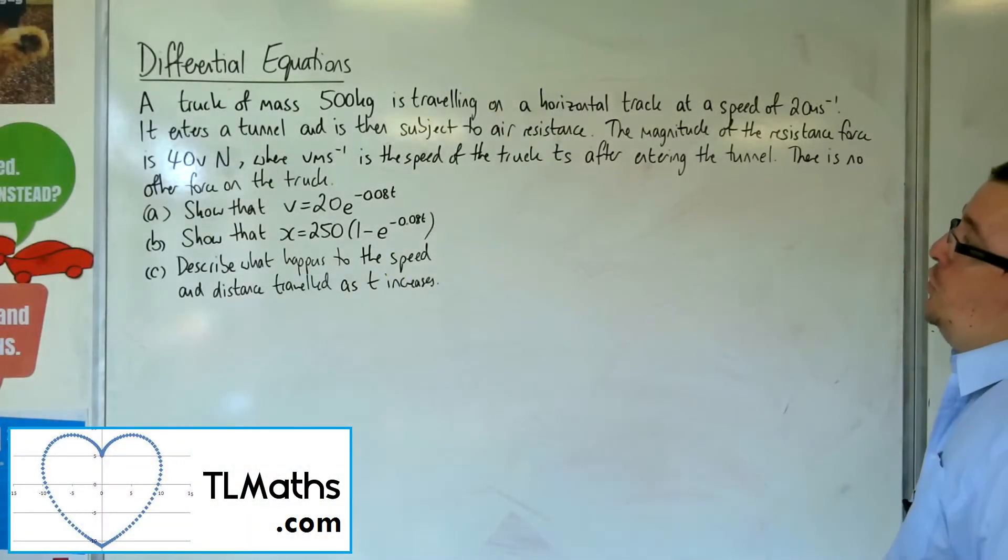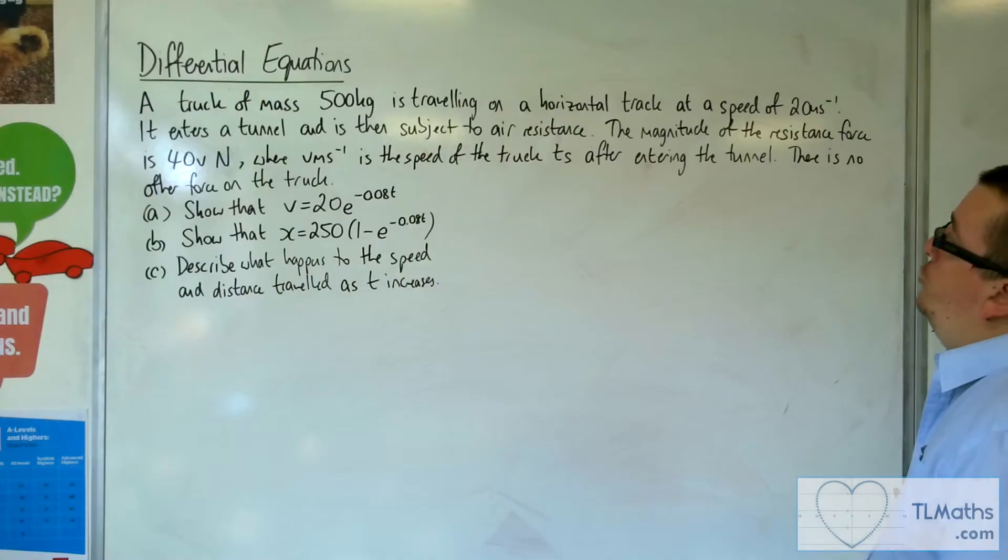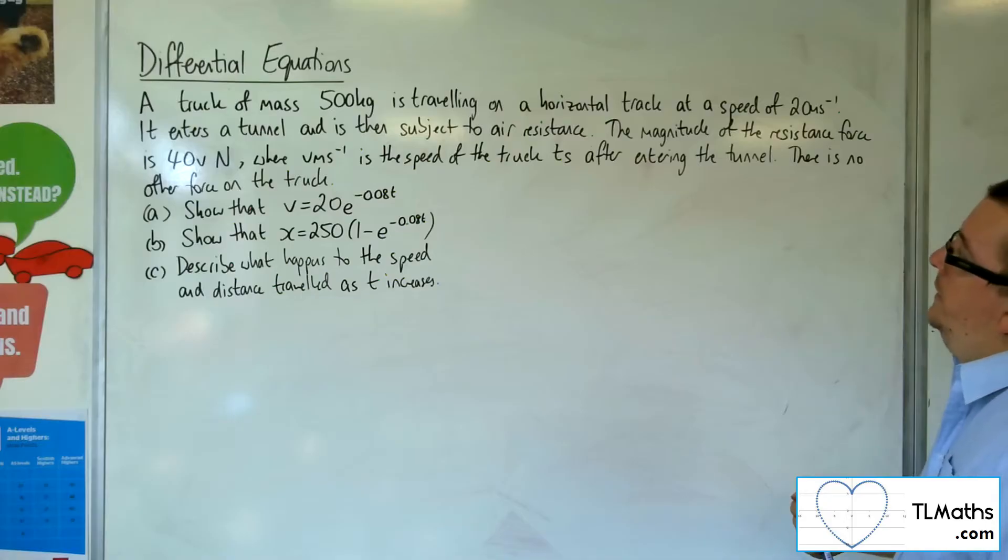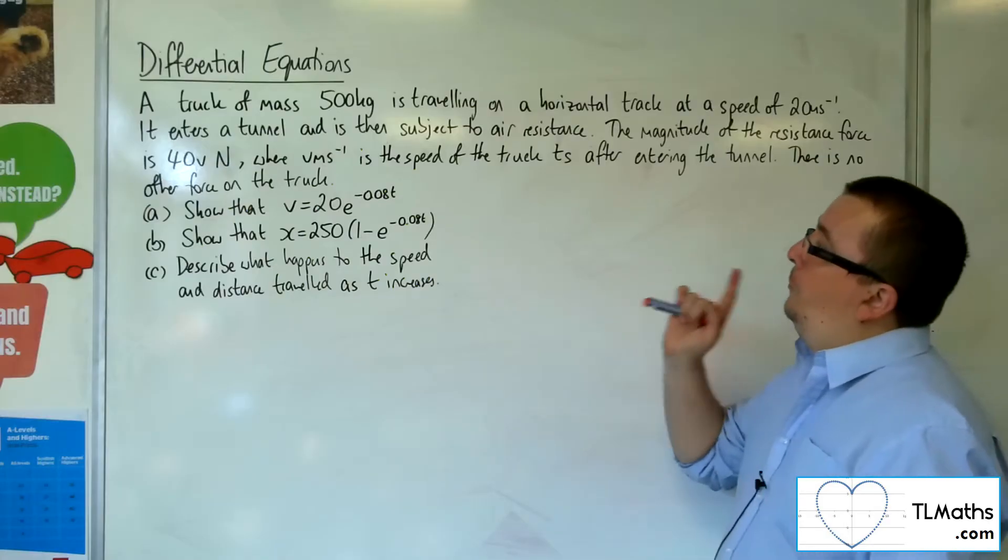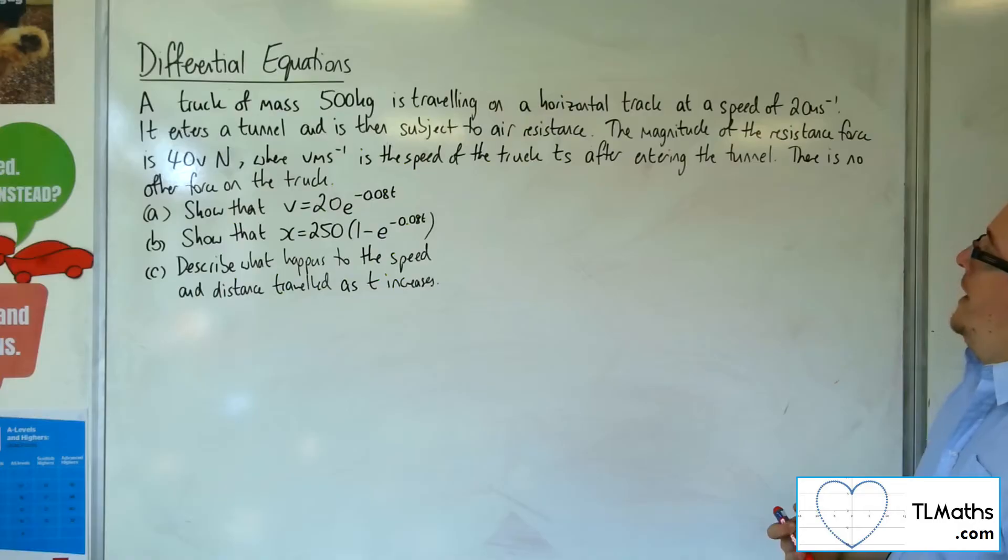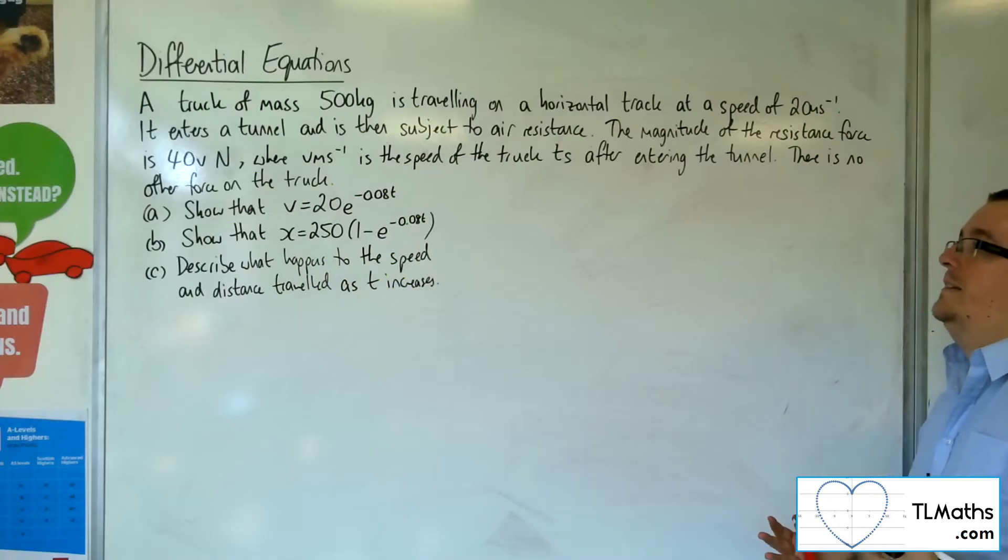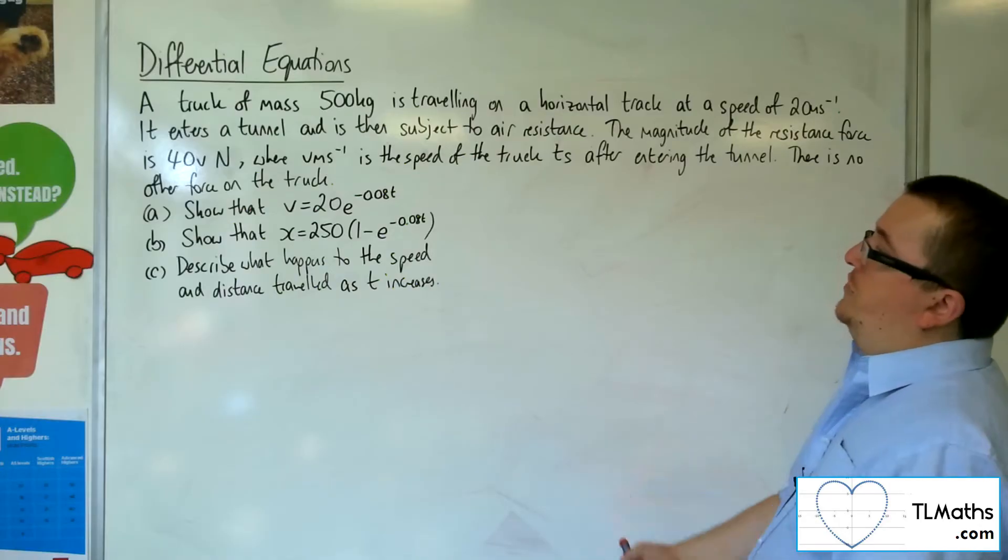A truck of mass 500 kilos is traveling on a horizontal track at a speed of 20 meters per second. It enters a tunnel and is then subject to air resistance. The magnitude of the resistance force is 40V newtons, where V meters per second is the speed of the truck T seconds after entering the tunnel. There is no other force on the truck, so the only force affecting it is the air resistance of 40V newtons.